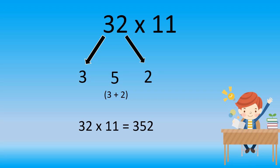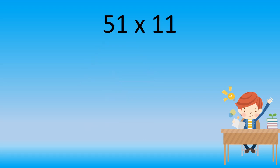You all got it right. Let's try it once again. 51 multiplied by 11. The same step we have to continue. We have to write 5, 1, add this up and write it in between. And we get the answer. 51 multiplied by 11 is equal to 561.